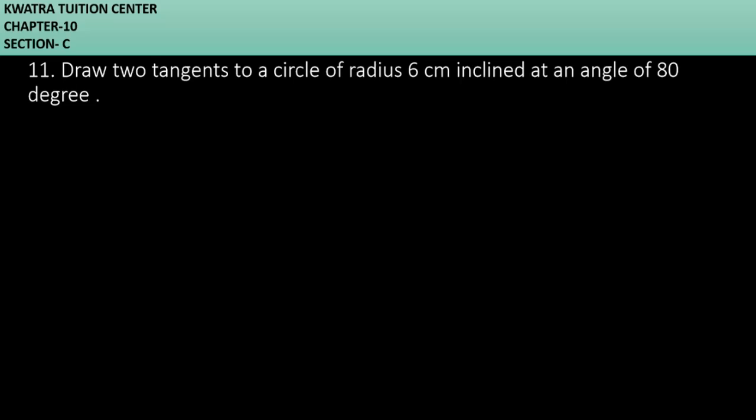Hello everyone, let's start with section C. This is from DOE paper. We are starting from section C and question number 11 says that you have to draw two tangents to a circle of radius 6 cm inclined at an angle of 80 degrees.